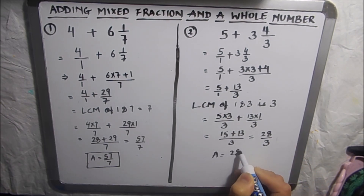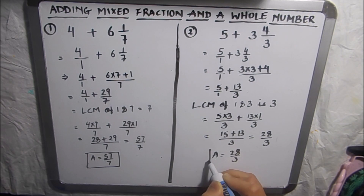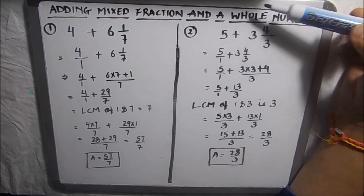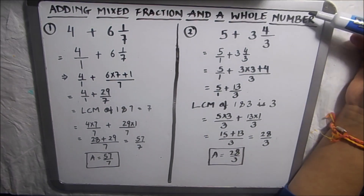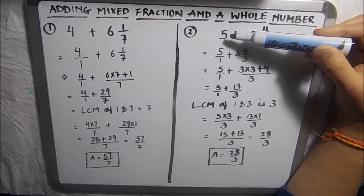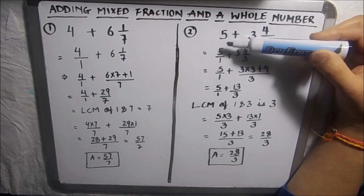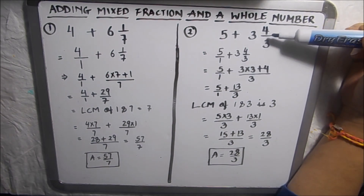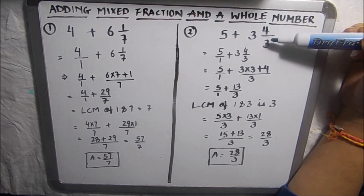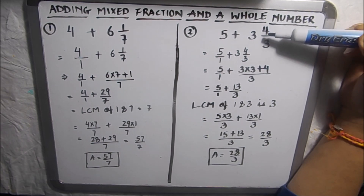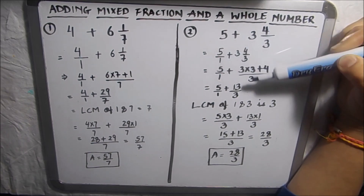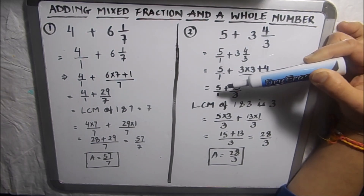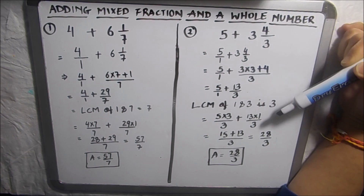So to summarize: when we add a mixed fraction and a whole number, any whole number will have a denominator of 1. Then we convert the mixed fraction into an improper fraction, and then we follow the steps to add two improper fractions.